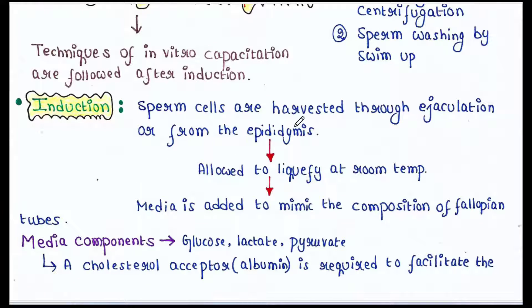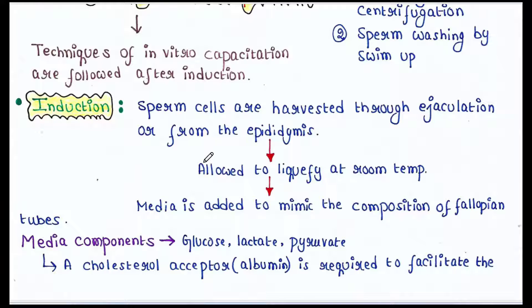Sperm cells are harvested through ejaculation or directly from the epididymis. They are allowed to liquefy at room temperature. Then media is added to mimic the composition of the fallopian tubes. The incubation of sperm in this media is very important, since capacitation occurs at this stage.